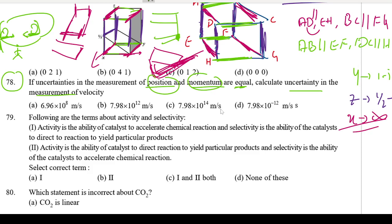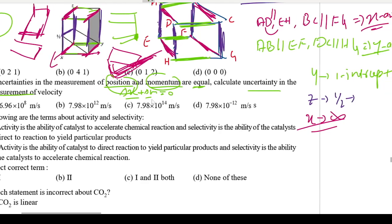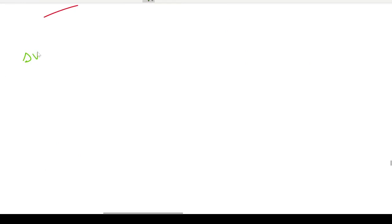So here, the uncertainty in position and uncertainty in momentum are equal. We need to calculate the uncertainty in velocity. Given that Δx = Δp, and these are equal.